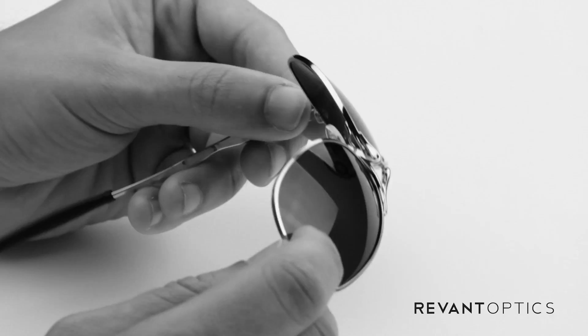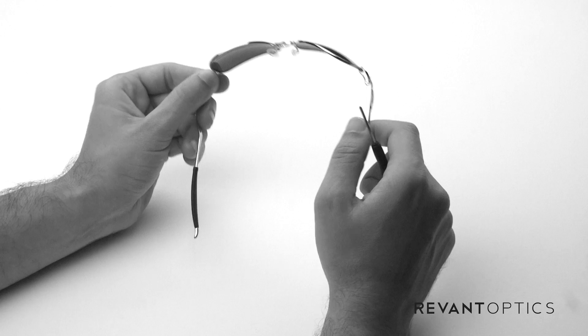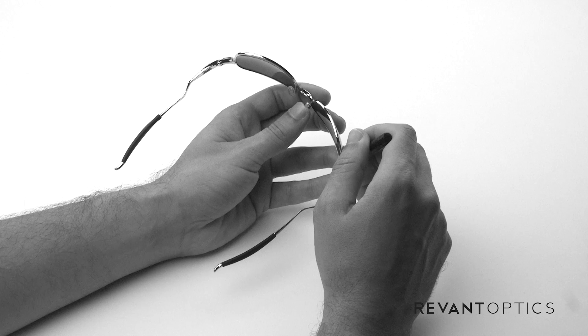And you're gonna need a tiny Phillips head screwdriver. Every purchase of RevantOptics lenses for this particular frame includes this screwdriver. It has a magnetic tip, so it allows for easier installation holding onto the screw there with that tip.